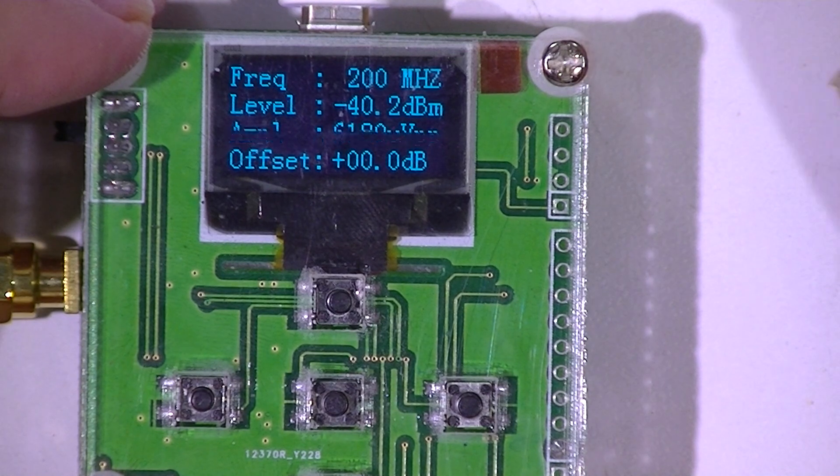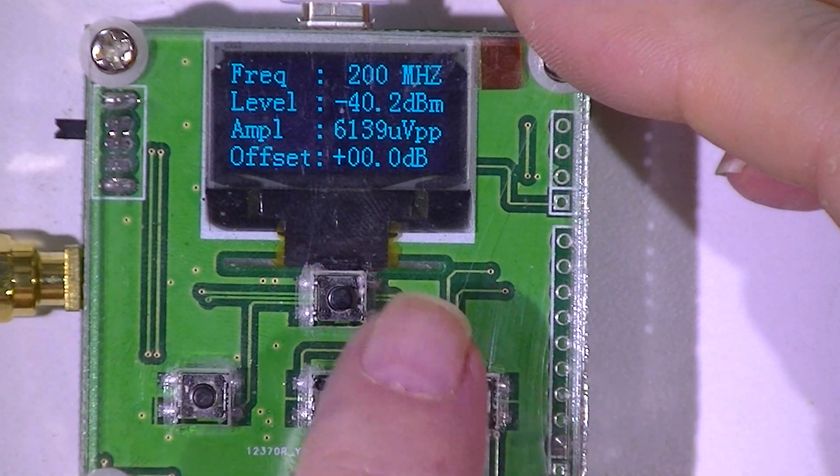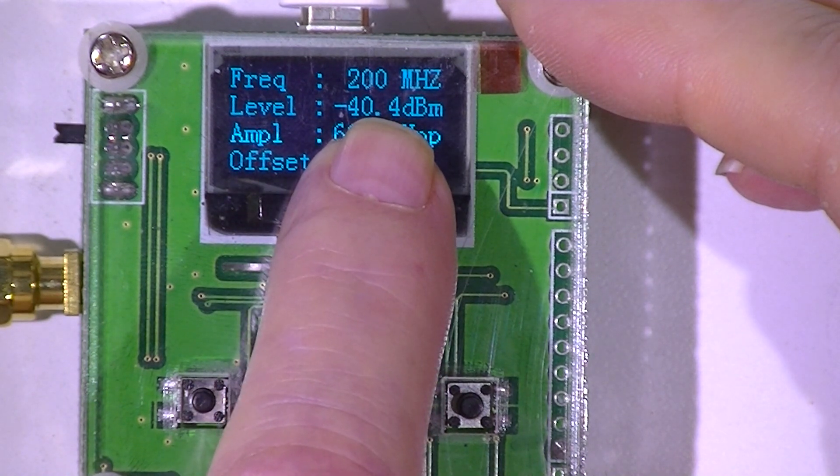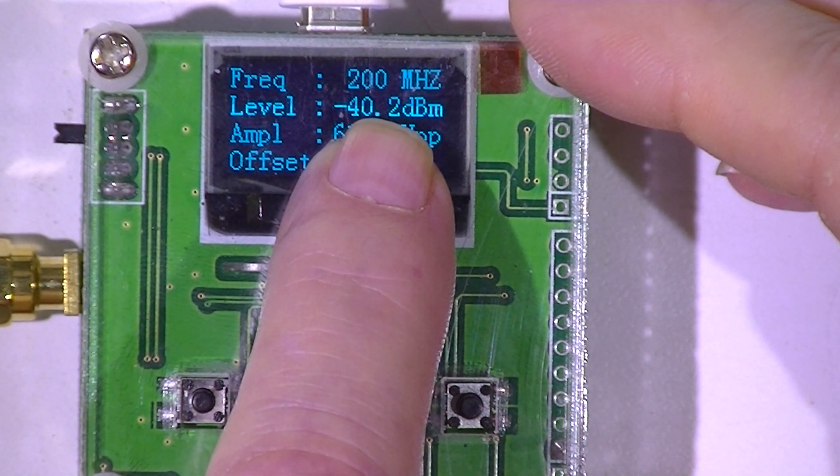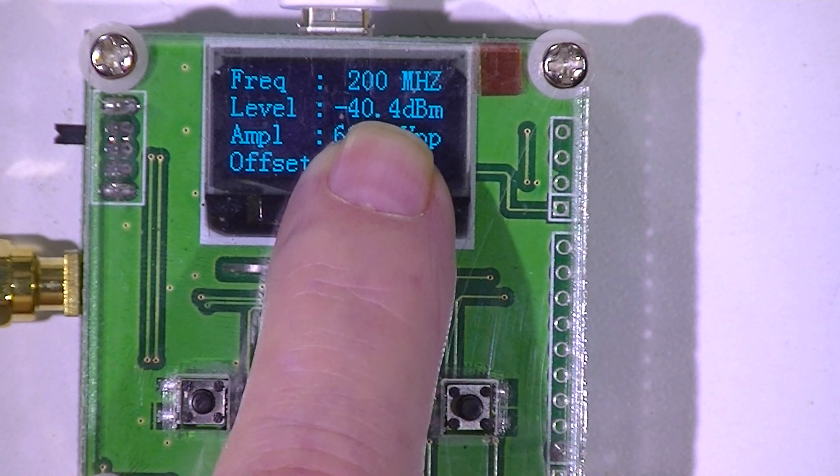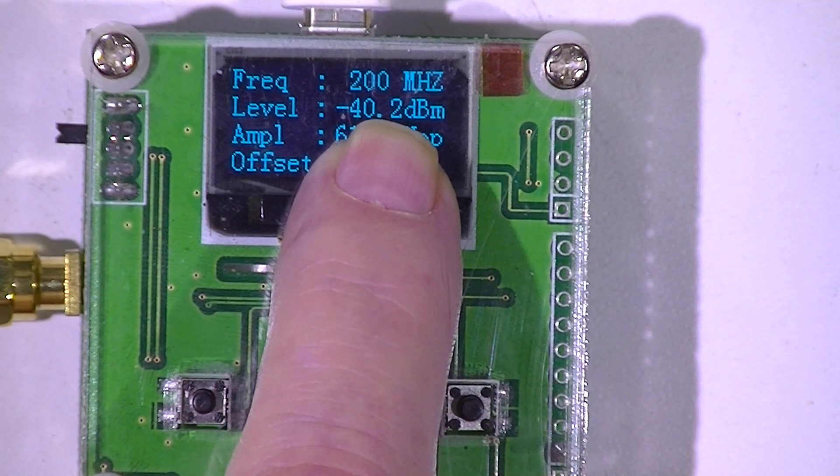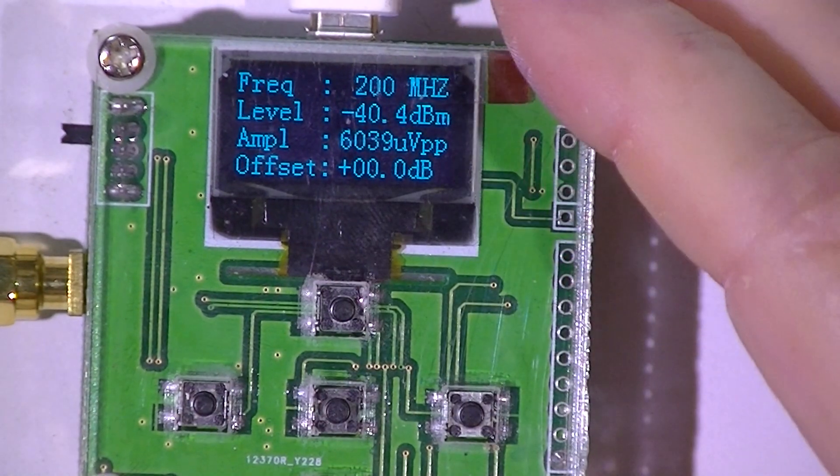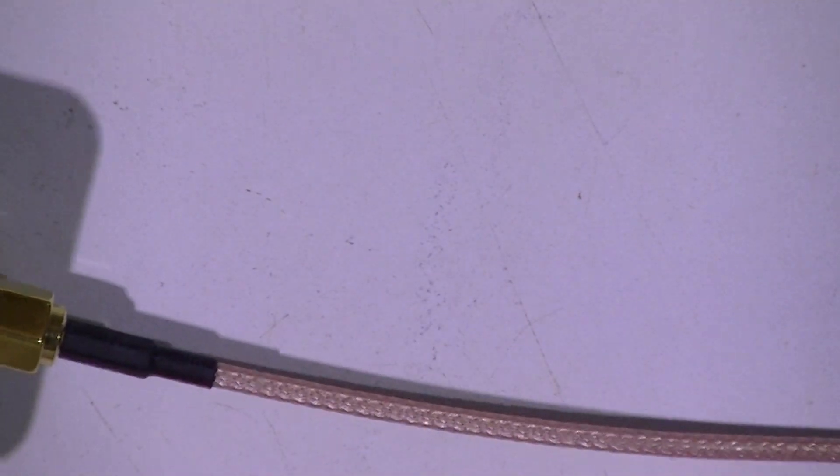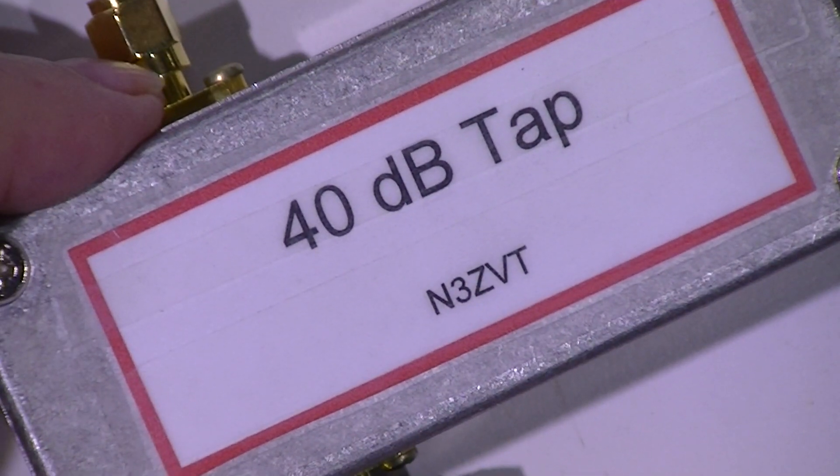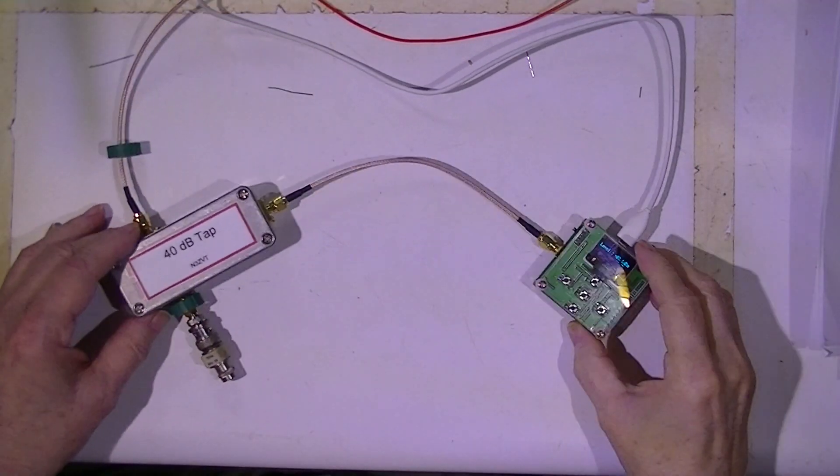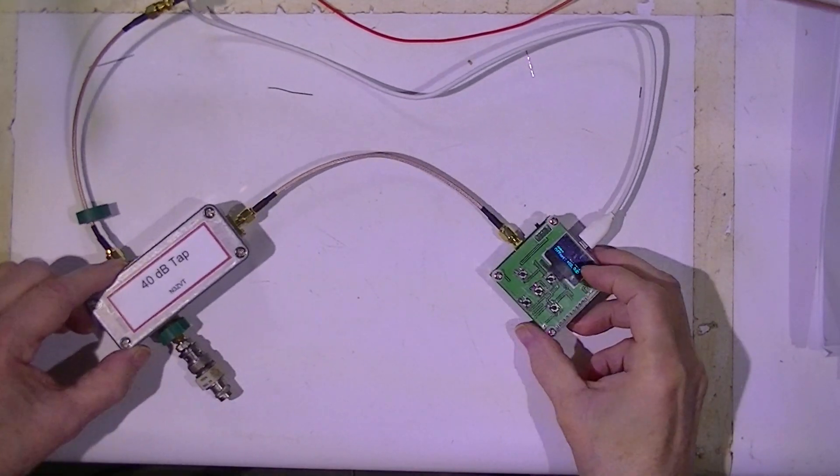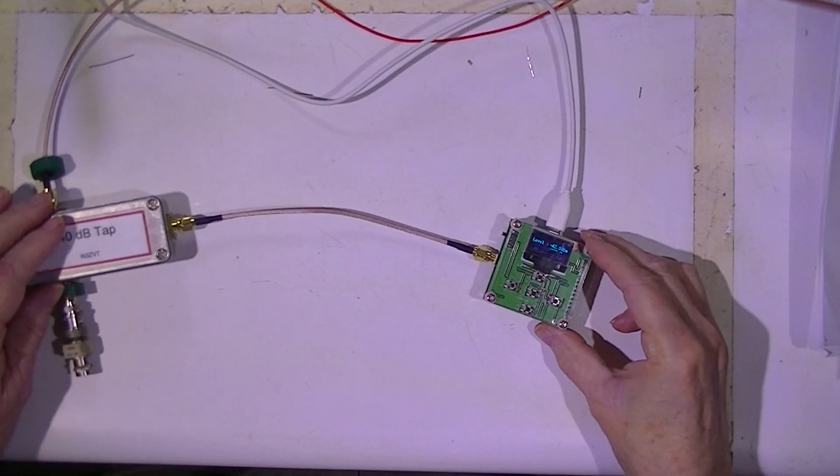It certainly is a 40 dB tap. This was reading one-tenth of a dBm, and it's now reading minus 40.2, which is certainly within the accuracy of the resistive divider that we used in the 40 dB tap. So it actually is a 40 dB tap. In fact, it's more accurate than I thought it was.